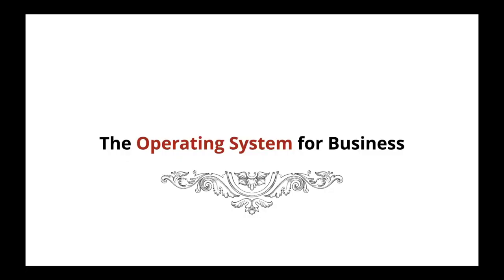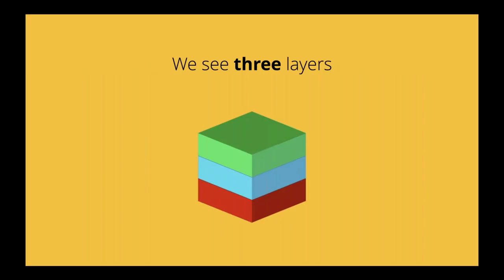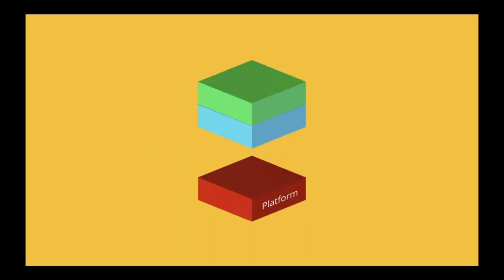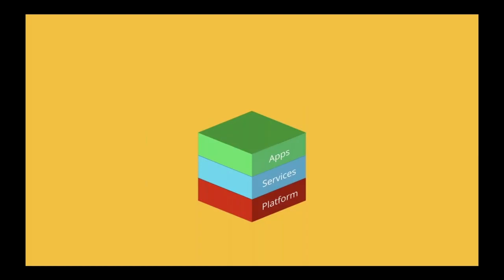This is the operating system for business — this is what we call Zoho One. When we talk about the operating system for business, we see three core layers: the first is the platform layer, the second is a services layer, and third are the apps or apps layer.